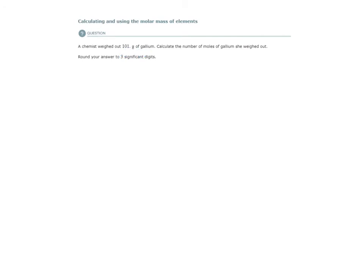If you look at your periodic table, gallium has an element symbol of GA, atomic number 31, and an atomic mass of 69.723.